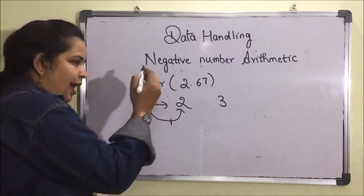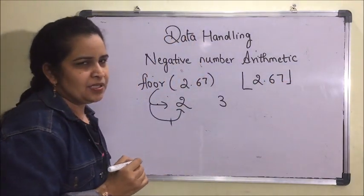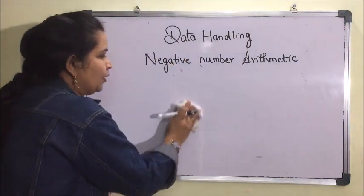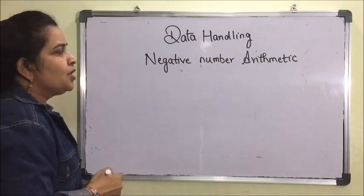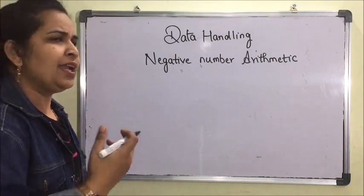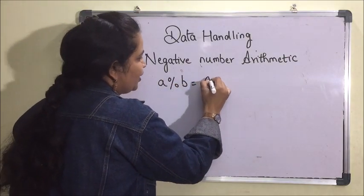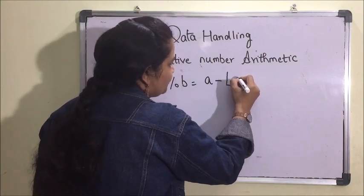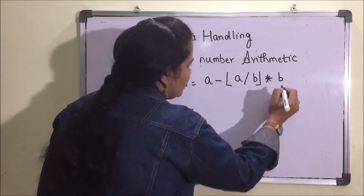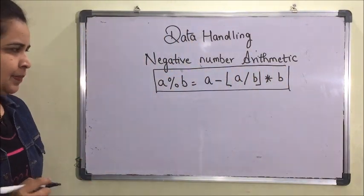The floor function is represented using floor brackets, like floor(2.67). When we evaluate the modulo of two numbers, we use this floor function. The formula Python uses to find the modulo of any number is: a mod b = a minus floor(a divided by b) multiplied by b.